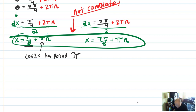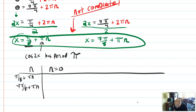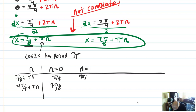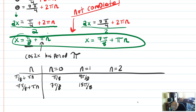Make a little t-chart with n, then π over 8 plus πn and 7π over 8 plus πn. If n equals 0, I get π over 8 and 7π over 8. If n equals 1, I take πn as 8π over 8 to match denominators, giving 9π over 8 and 15π over 8. If n equals 2, I add another 8π over 8 to the numerators, giving 17π over 8 and 23π over 8.